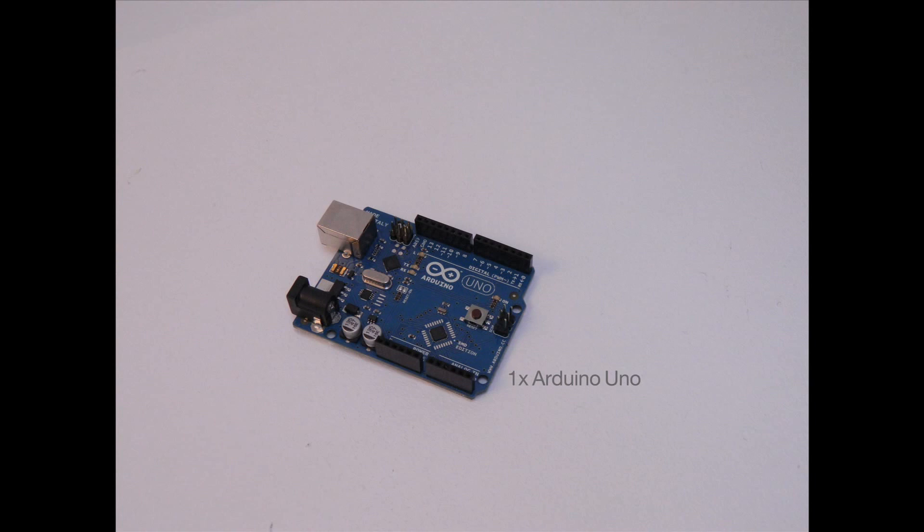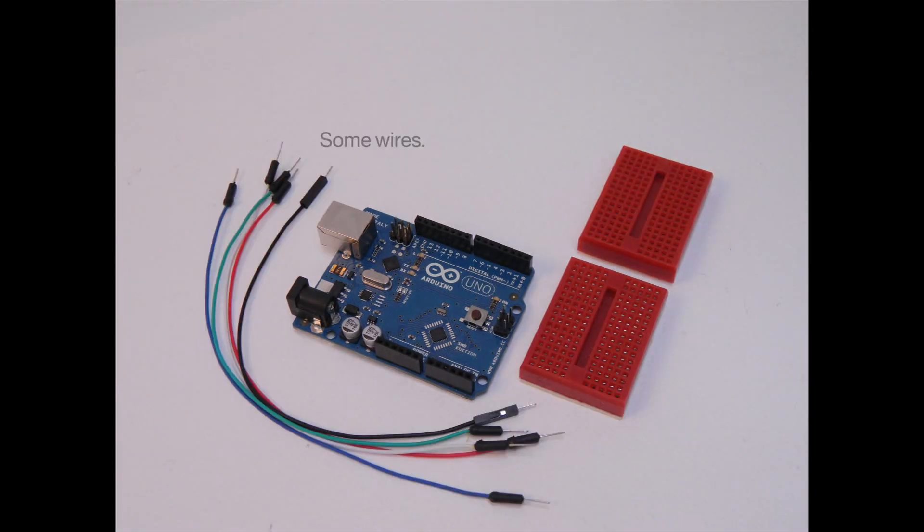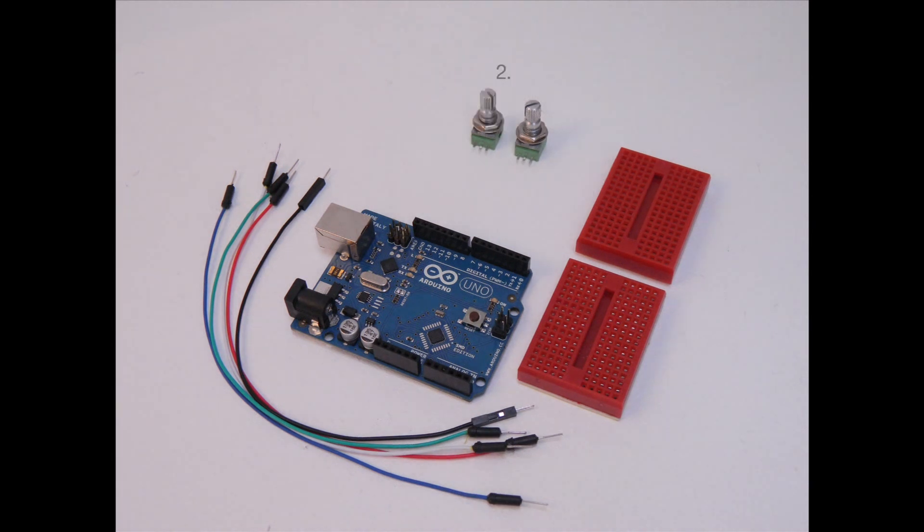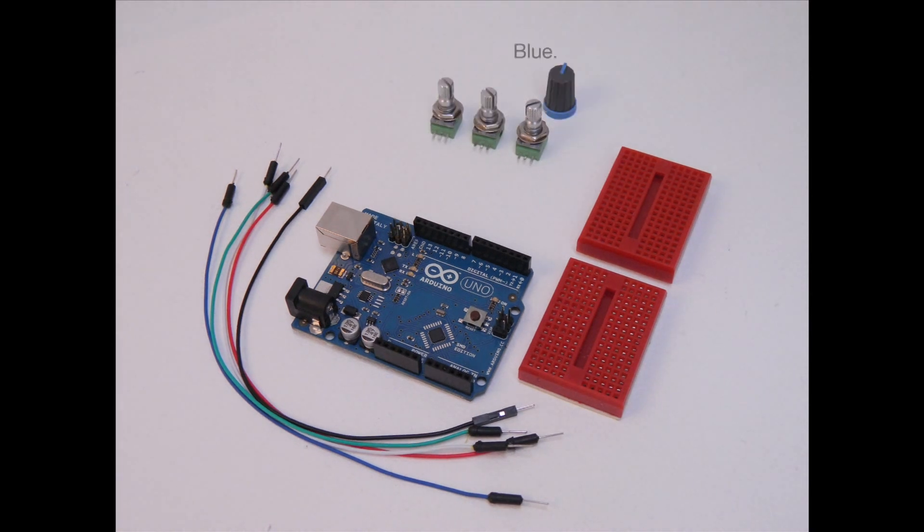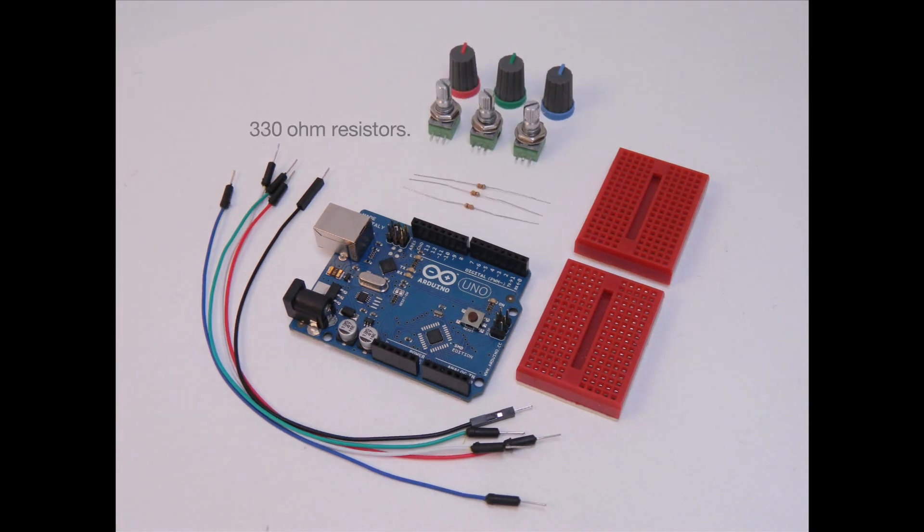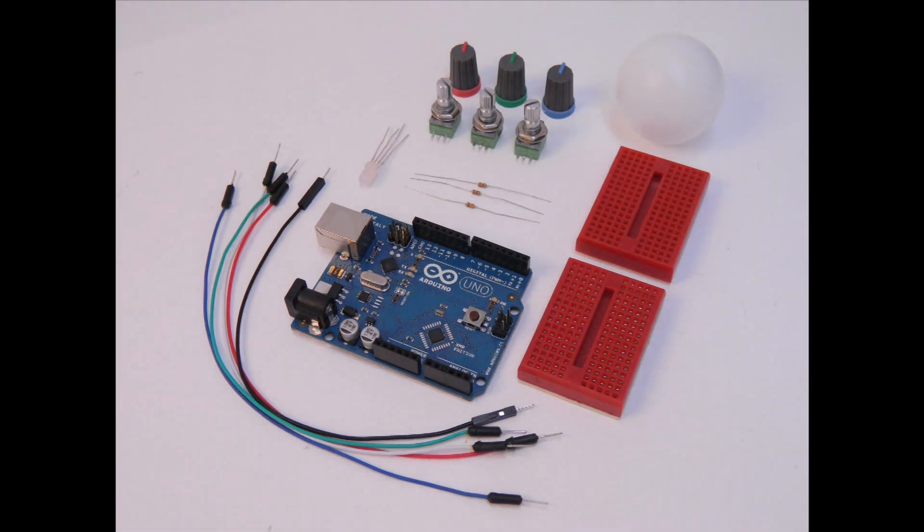Now first we're going to need some components. One Arduino board, two breadboards, some wires, three potentiometers, three dials, three 330 ohm resistors, an RGB LED and a ping pong ball.